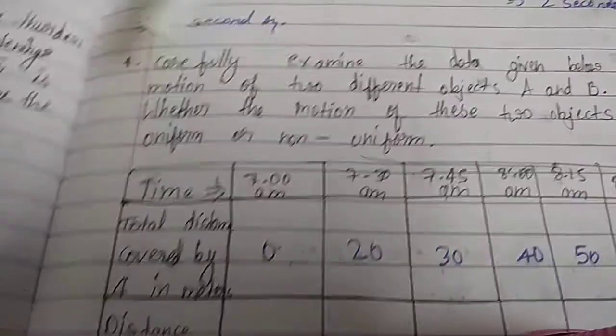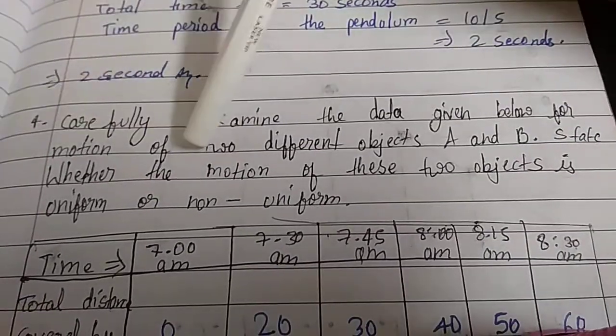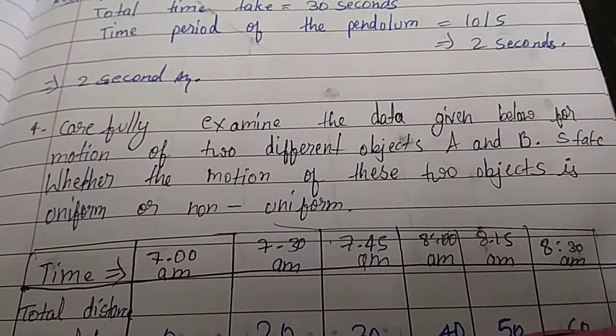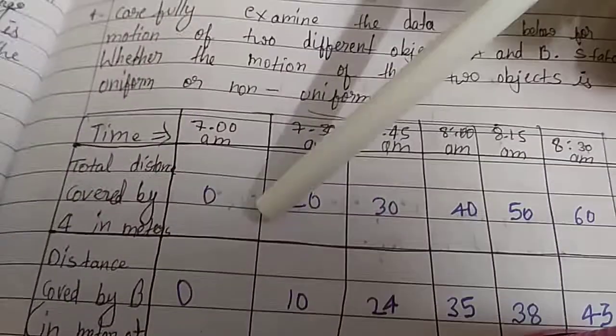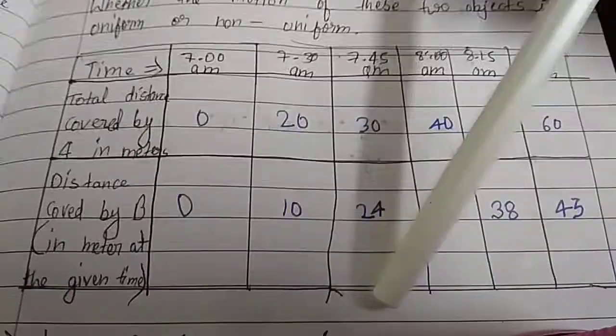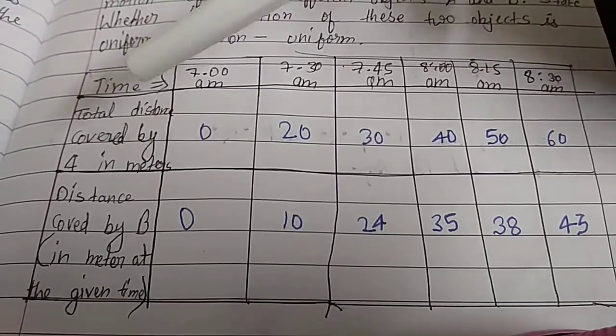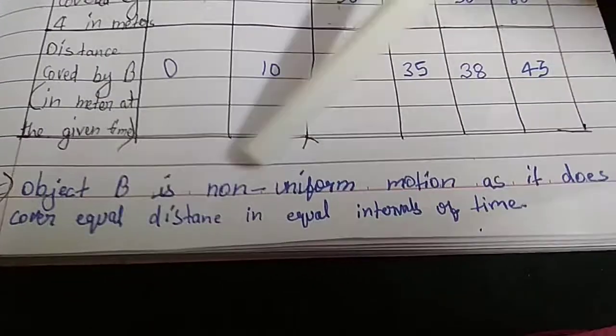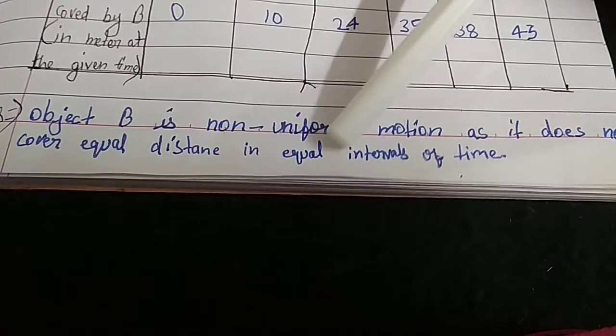Eleventh question: Carefully examine the data given below for motion of two different objects A and B. State whether the motion of these two objects is uniform or non-uniform. This is our data table showing total distance covered by A in meters at the given time and distance covered by B in meters at the given time. Answer: Object B is in non-uniform motion as it does not cover equal distance in equal intervals of time.